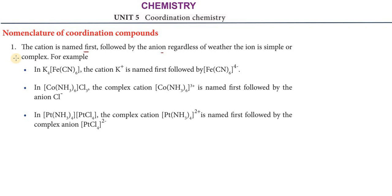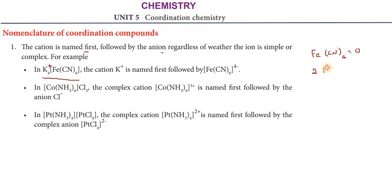First, the cation is named, then the anion is named second. For example, in a Coordination Compound, potassium is the cation. The complex Fe[CN]6 — Fe has an oxidation state. We calculate: CN is minus 1, so 6 times minus 1 gives minus 6.